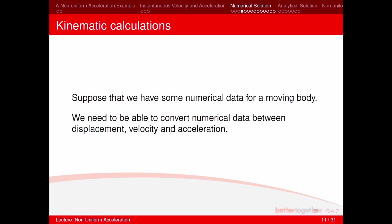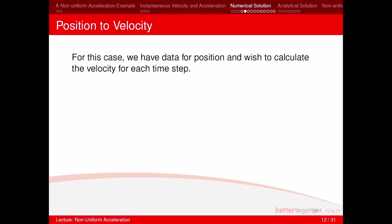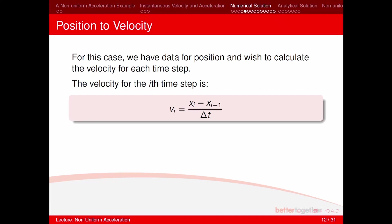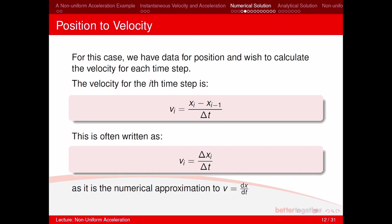If we have numerical data of a moving body, we need to convert between displacement, velocity, and acceleration. For converting position to velocity, the velocity at time step i is: v_i = (x_i − x_{i−1}) / Δt, which can be written as Δx_i / Δt. This is the numerical approximation of v = dx/dt.